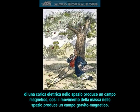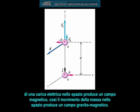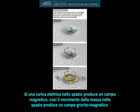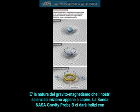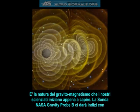So just as the motion of an electric charge through space produces a magnetic field, the motion of a mass through space creates a gravitomagnetic field. It is the very nature of gravitomagnetism which our scientists are just beginning to understand.